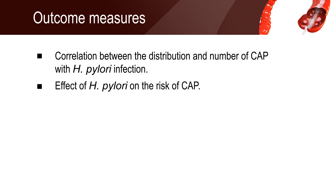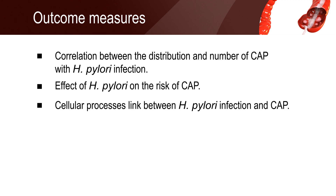Logistic regression models evaluated the effect of Helicobacter pylori on the risk of colorectal adenomatous polyps. The cellular processes link between Helicobacter pylori infection and colorectal adenomatous polyps was established by Pathway Studio.